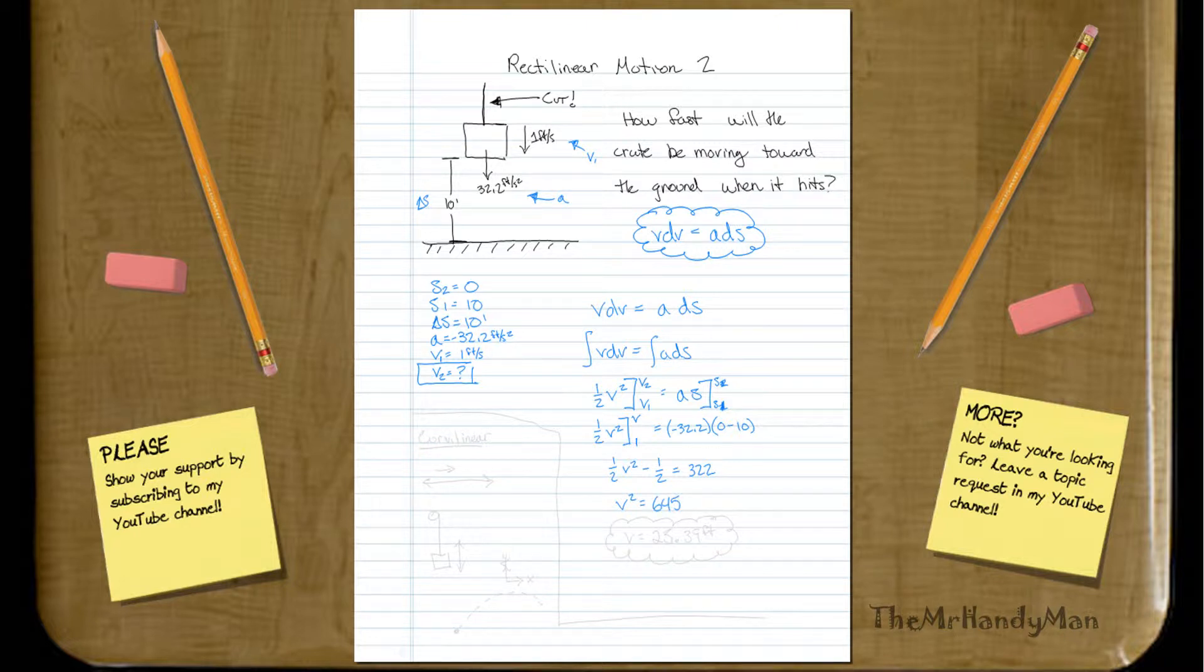Which, when you do the square root of both sides, you'll have v is equal to 25.39 feet.